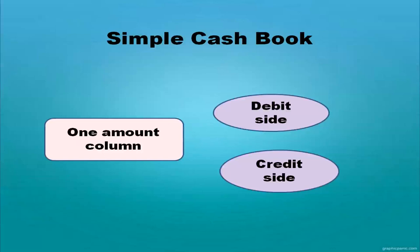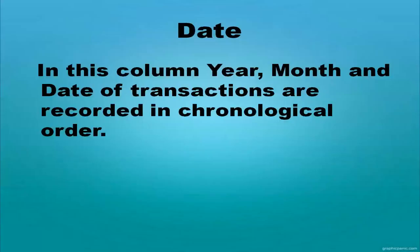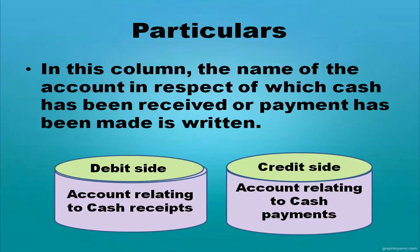In the simple cash book, only one amount column is there — one on the debit side and another on the credit side. In the format of the cash book, we write the date with year, month, and date; transactions are recorded in chronological order, that is, according to the order in which they occurred. In the particulars column, the name of the account in respect of which cash has been received or payment has been made is written. Accounts relating to cash receipts are recorded on the debit side; accounts relating to cash payments on the credit side.